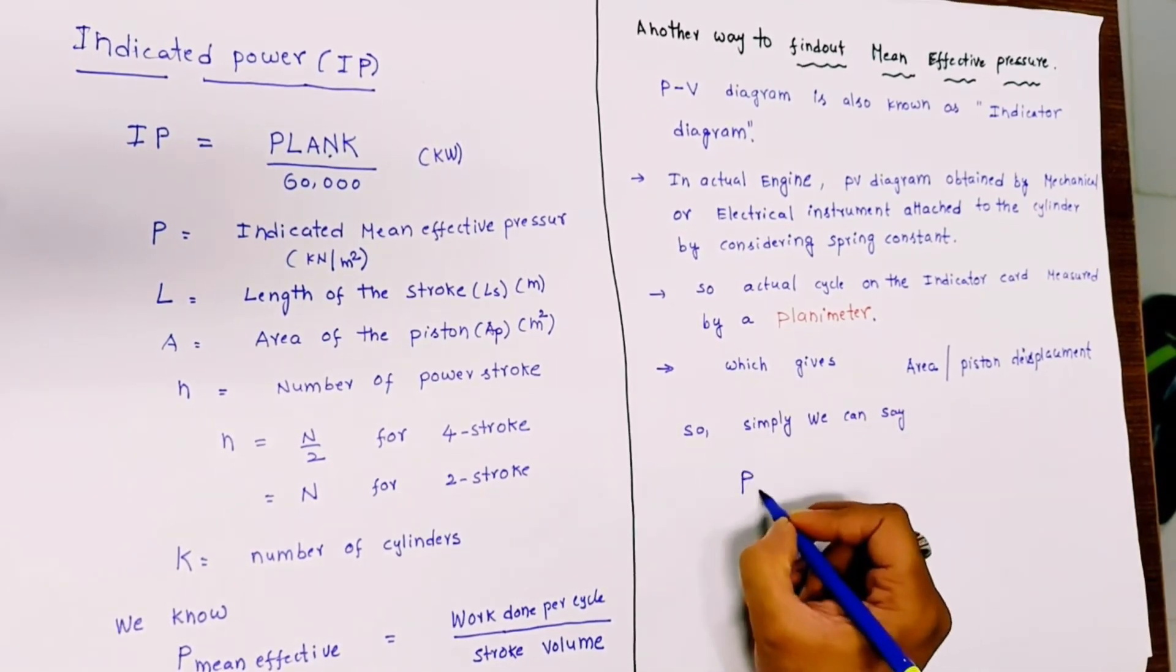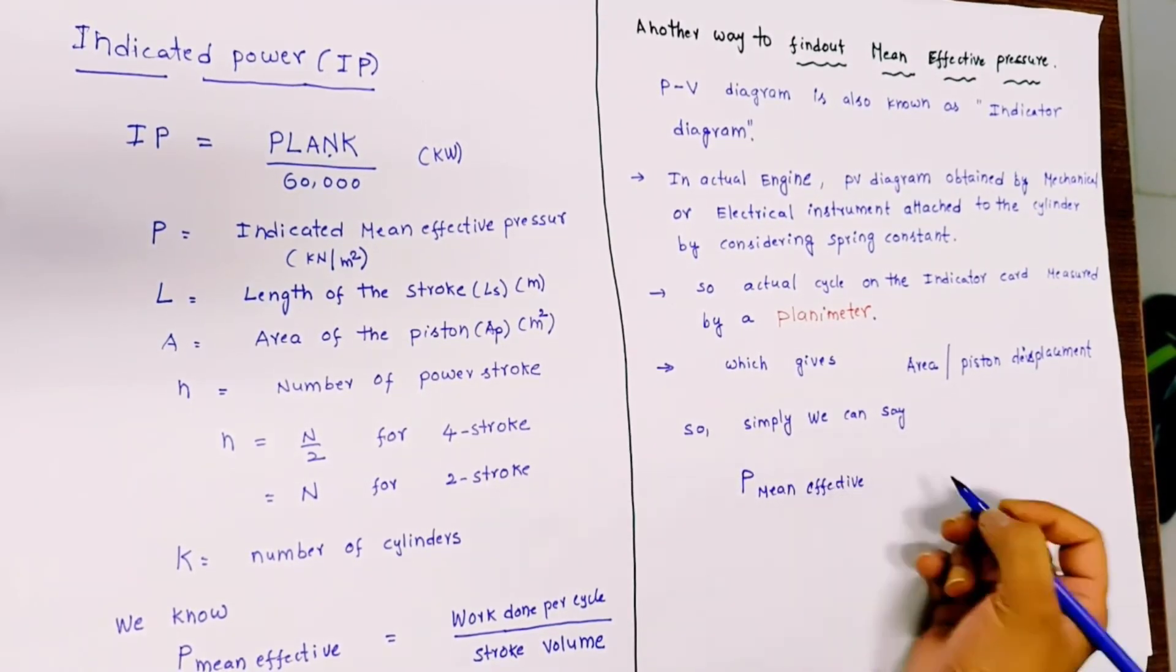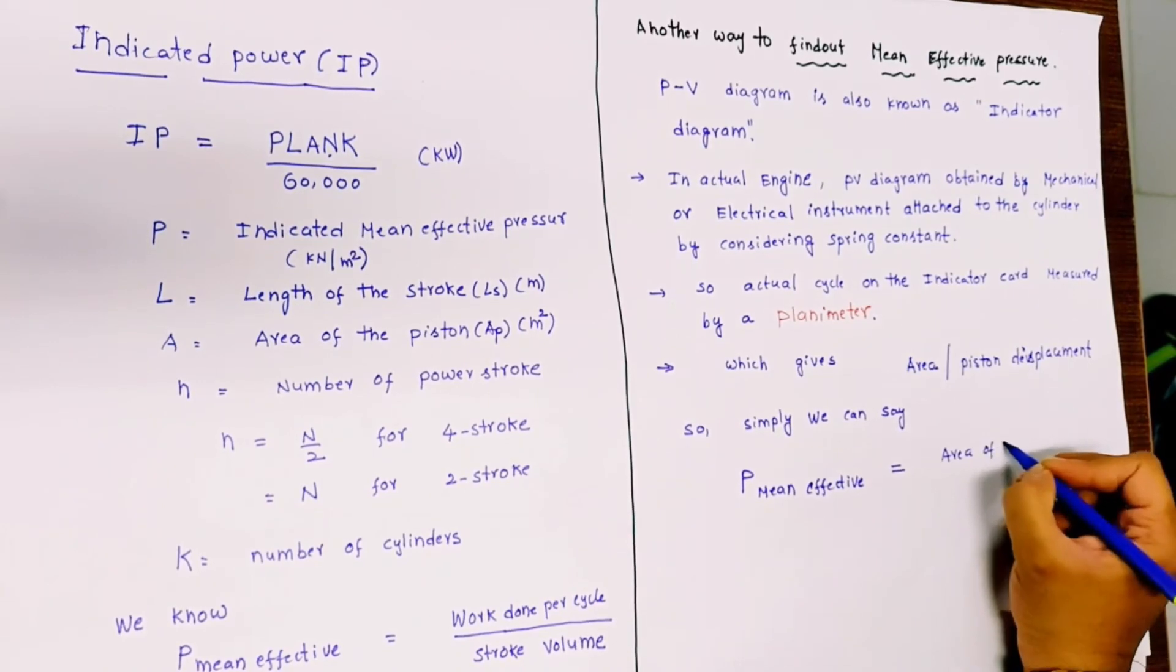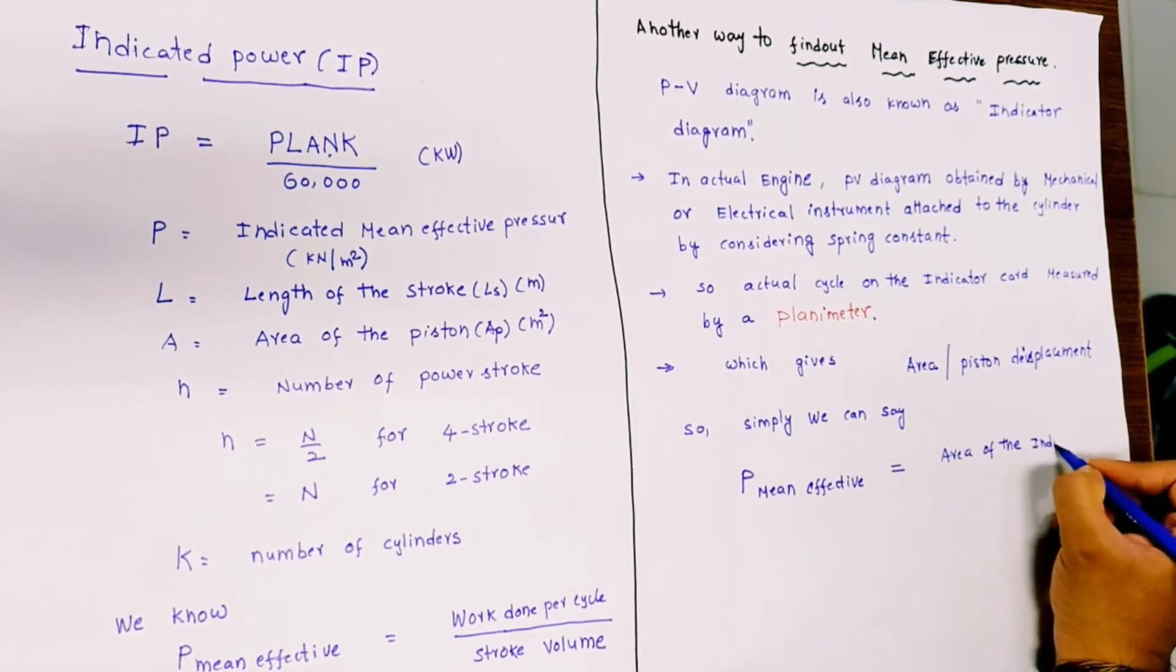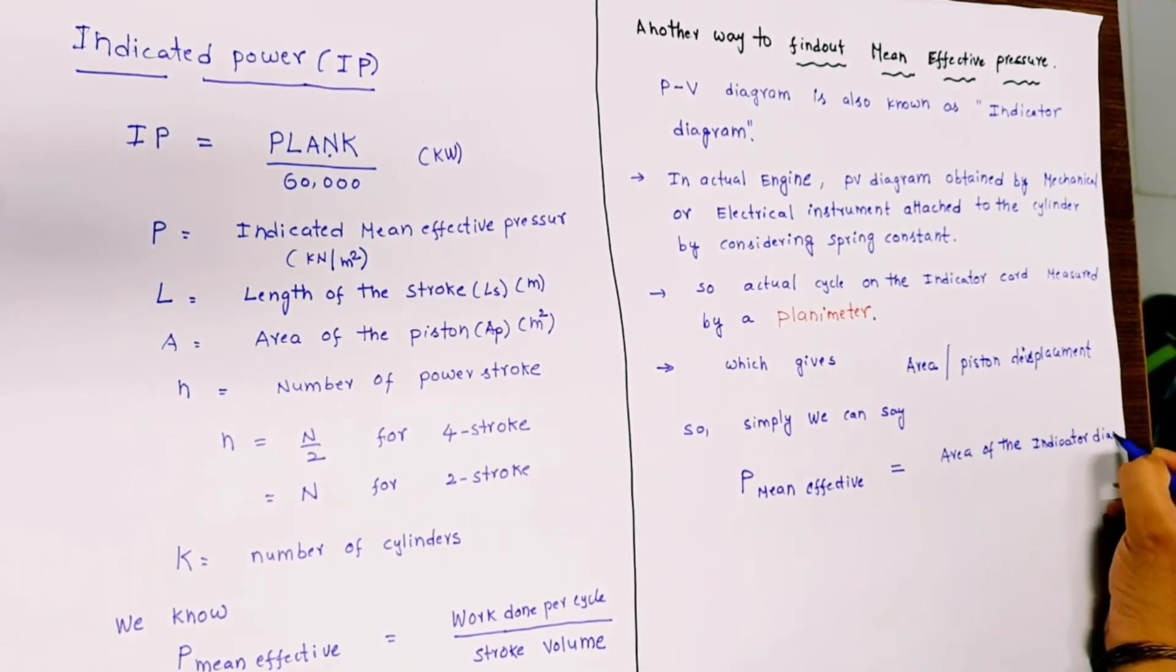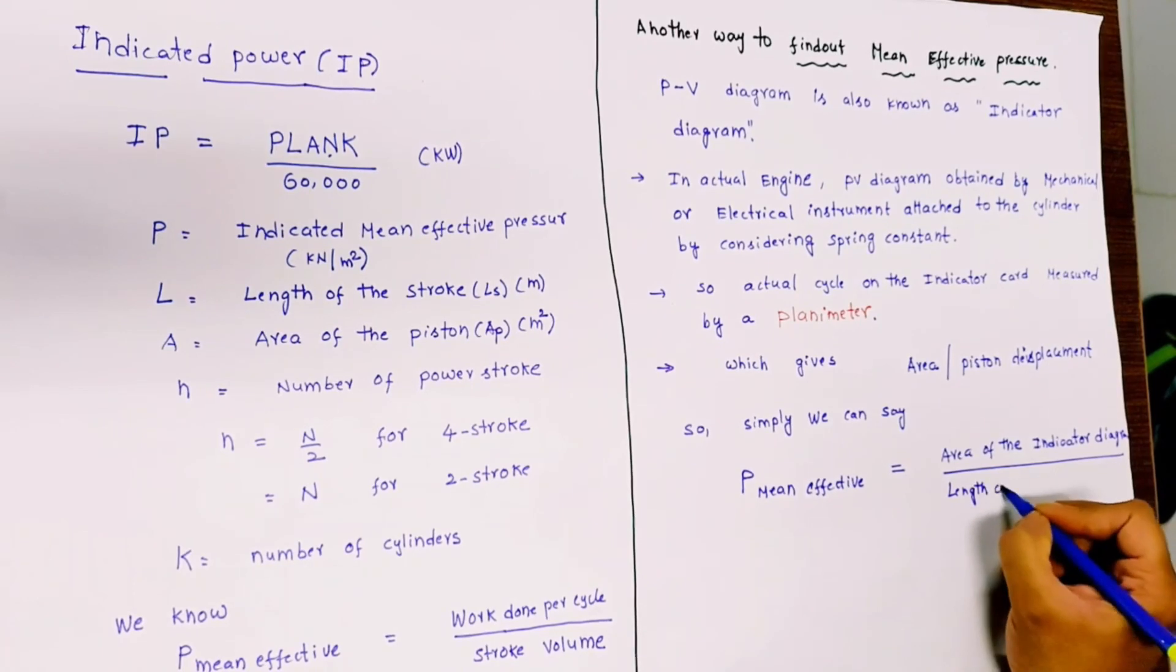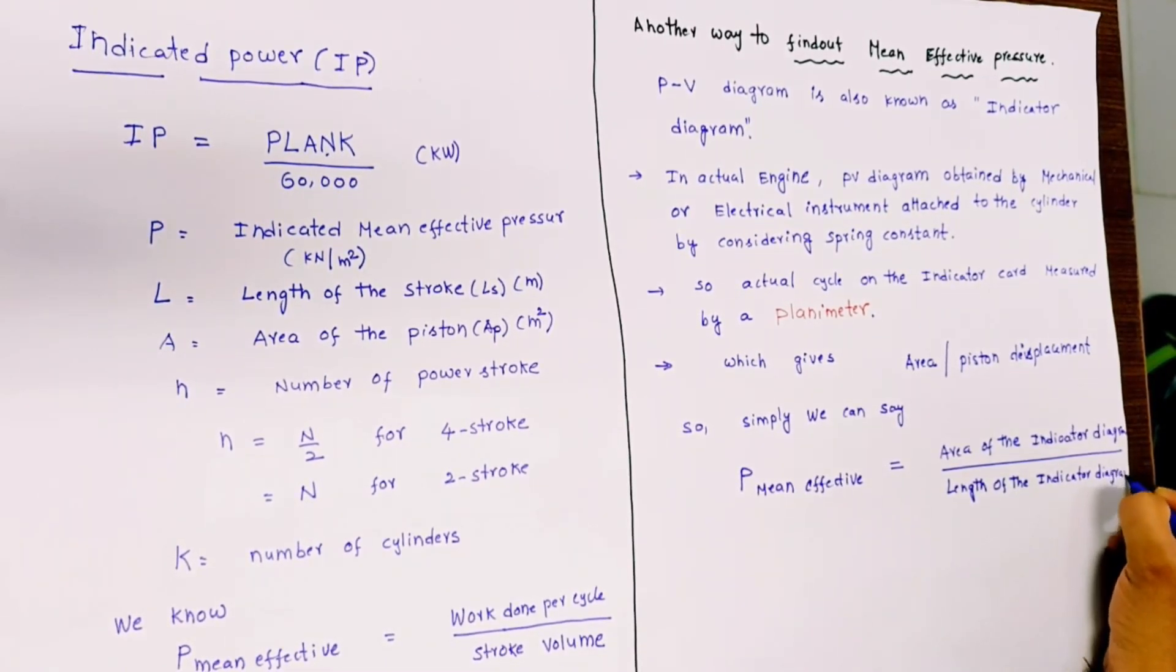P, the mean effective pressure, is equal to the area of the indicator diagram divided by the length of the indicator diagram, and it should be multiplied with the spring constant.